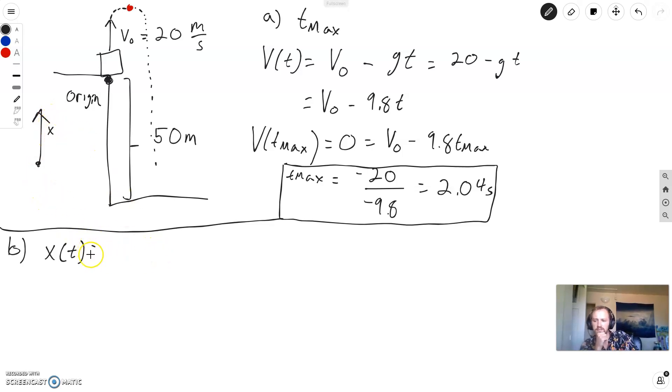So on x of t, I'll just write down the general equation. So this will work whenever an object is moving with constant velocity. This is a good equation. So what's my initial position? Well, my initial position, my stone is at the origin. So my initial position is going to be zero. My initial velocity, it's easy enough, 20t. And then we'll have minus 9.8 t squared over 2.